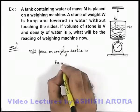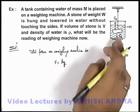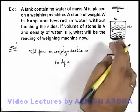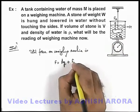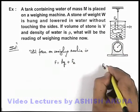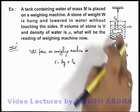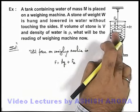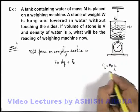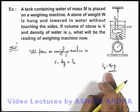This total force we can write as Mg, that is the weight of water, plus the buoyant force. And here buoyant force can be written as Vρg, as the total volume V is submerged and it is equal to the volume of liquid displaced. So the total weight of liquid displaced is Vρg.